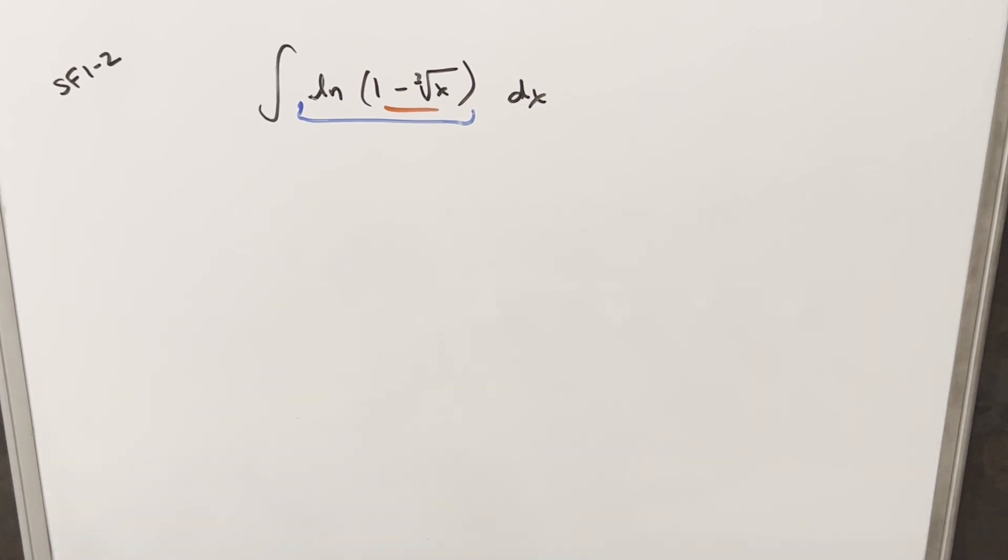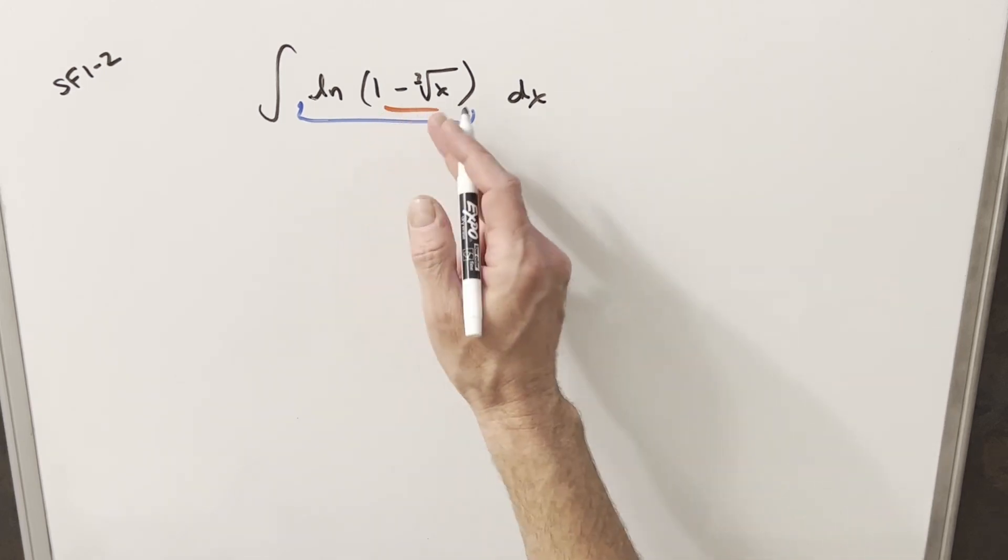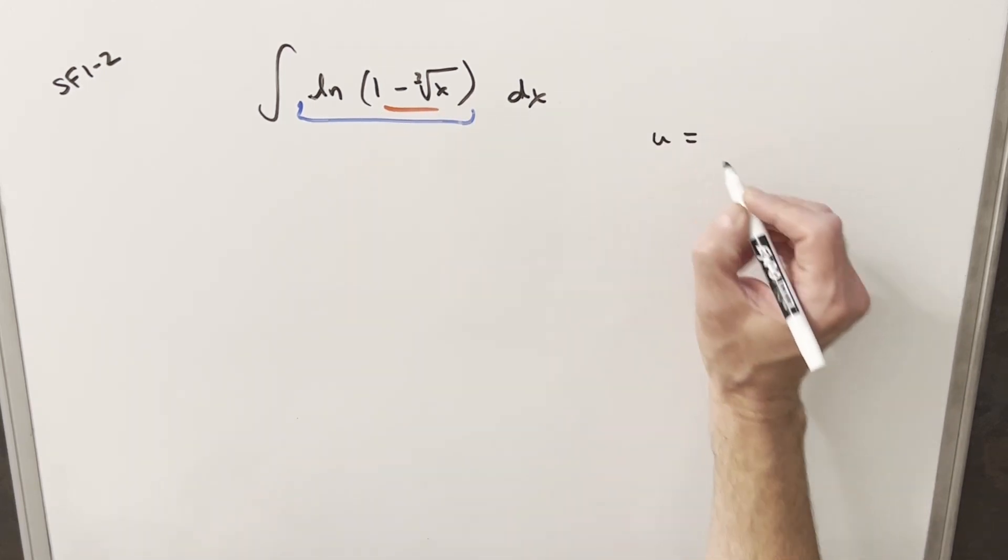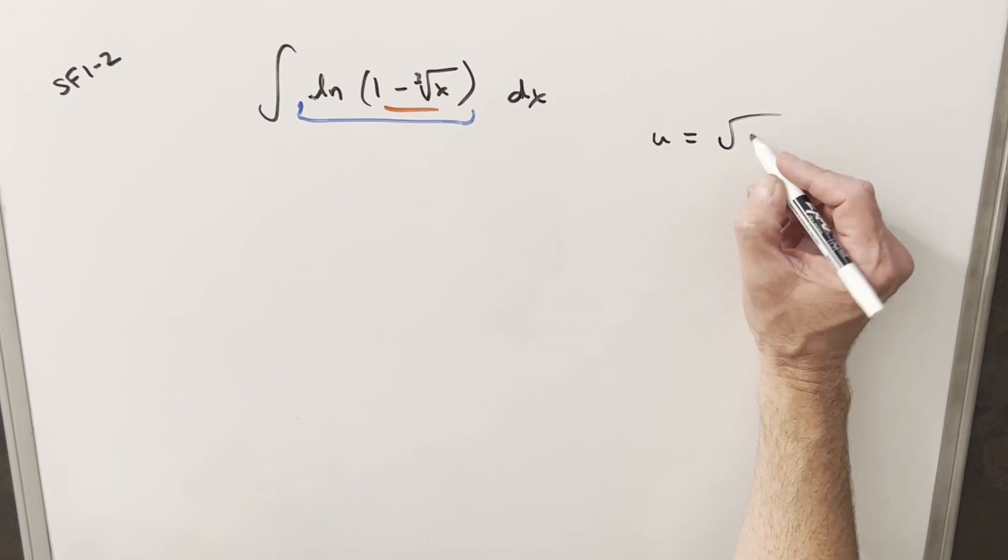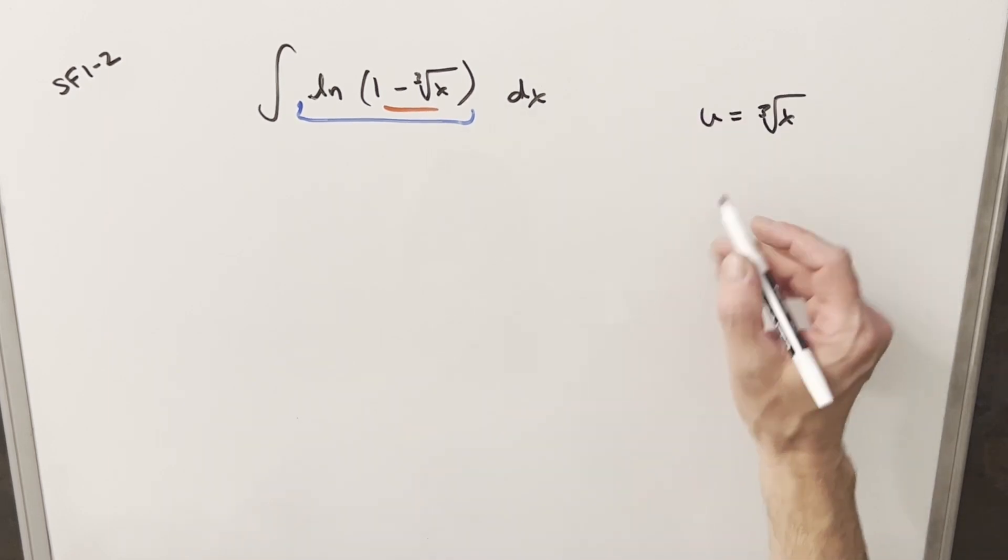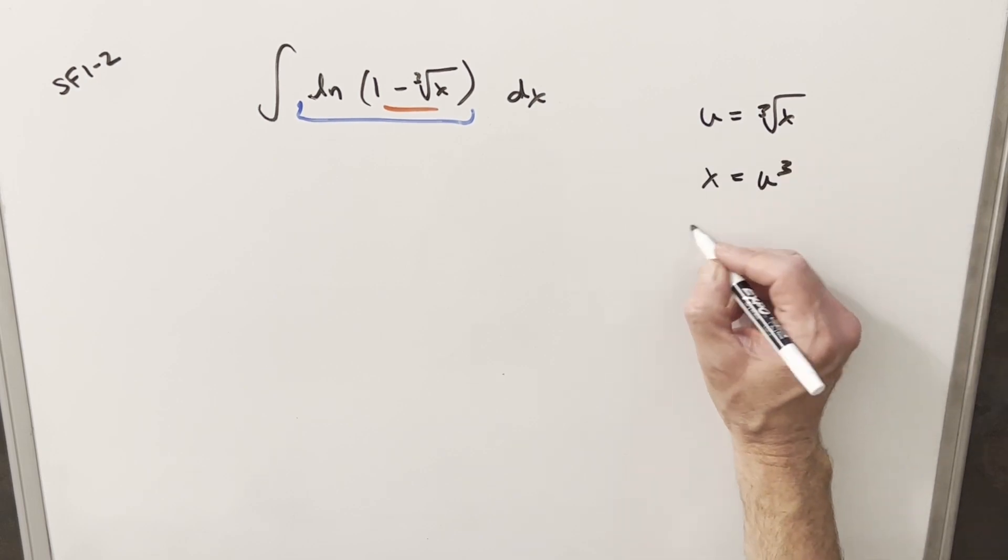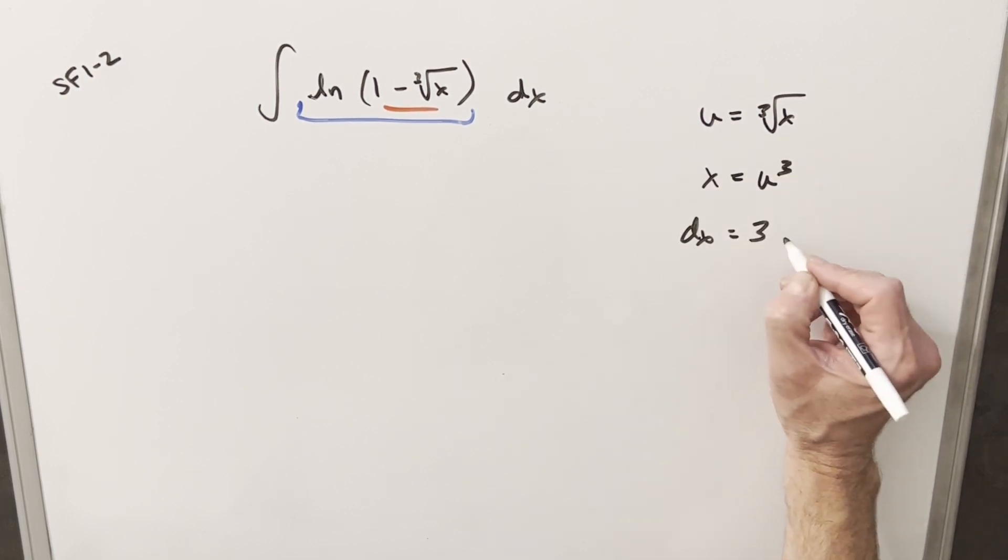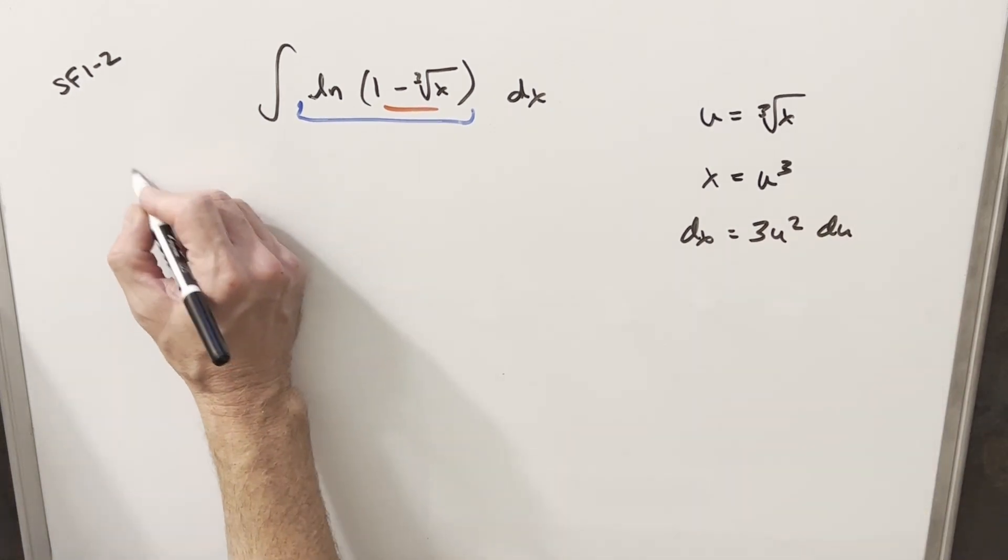What I choose to do is a u substitution. And rather than choosing my u to be this whole thing, I just instead chose to do my u to be just the cube root of x. So now from here, if I solve for x, we're going to find that x is going to be u cubed. And if I take my derivative, we're going to end up with 3u squared du.